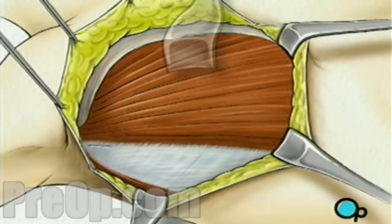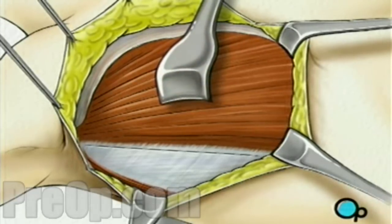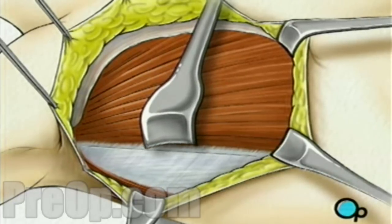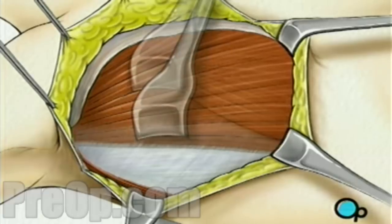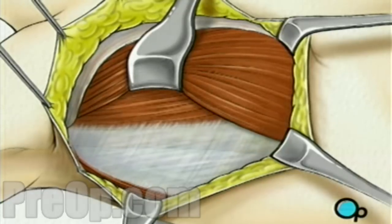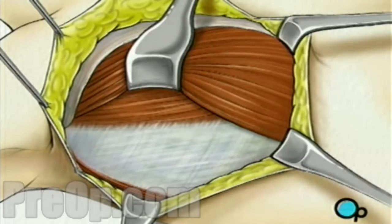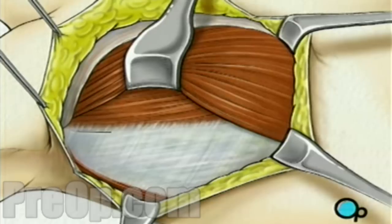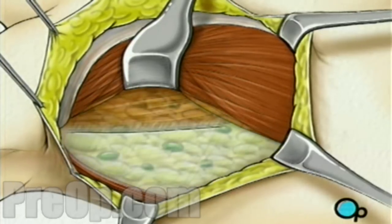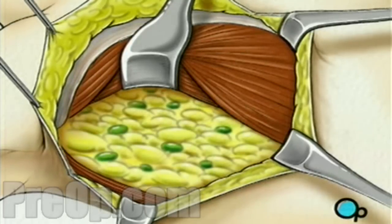The surgeon will pull this muscle temporarily aside, exposing the next layer of muscle, the pectoralis minor. The surgeon will then move this muscle aside as well, creating a clear view of the surrounding fatty tissue. Within this fat deposit lie lymph nodes, lymph vessels, blood vessels, and nerves.